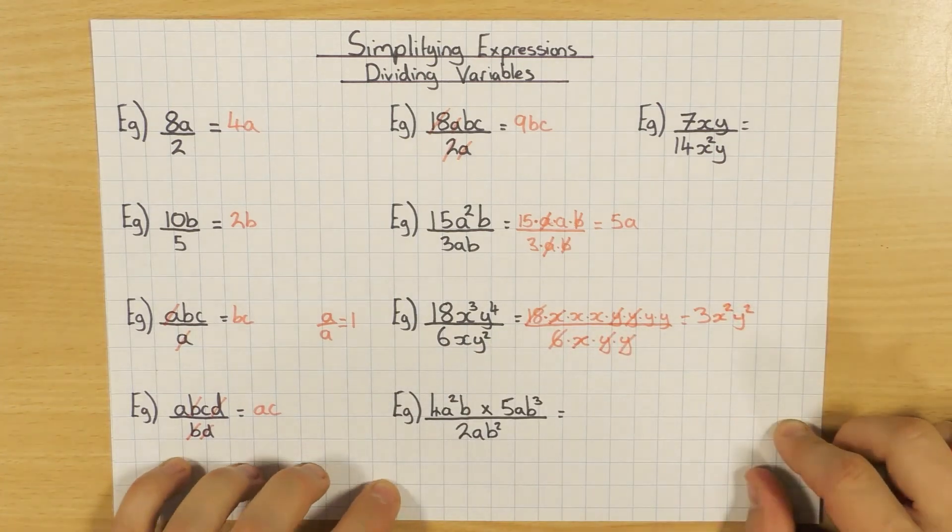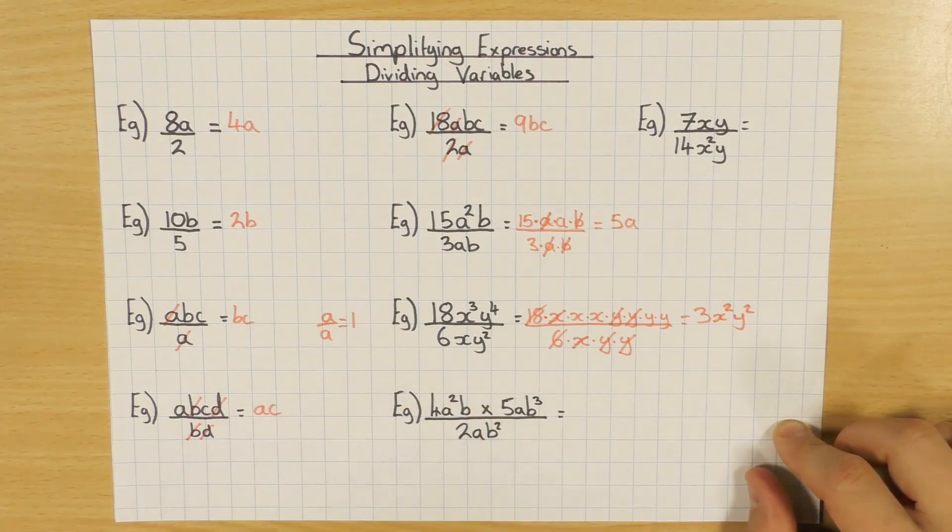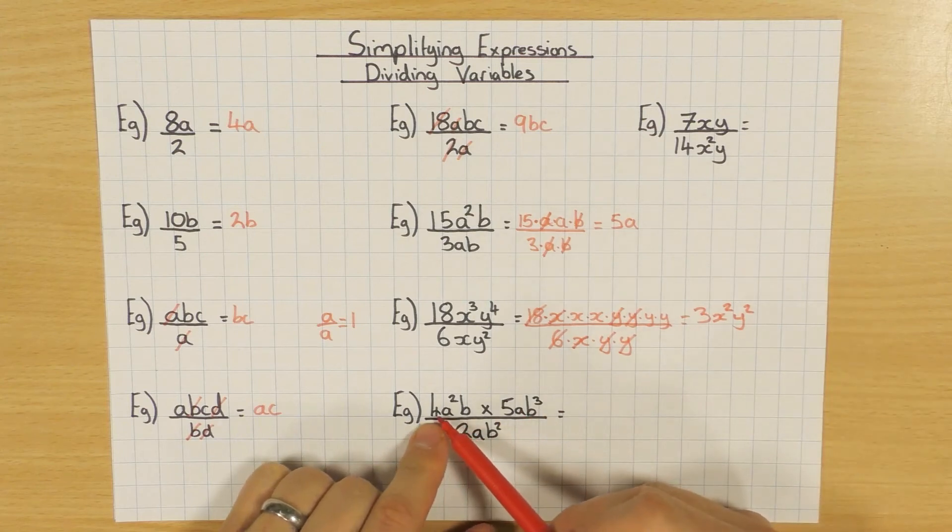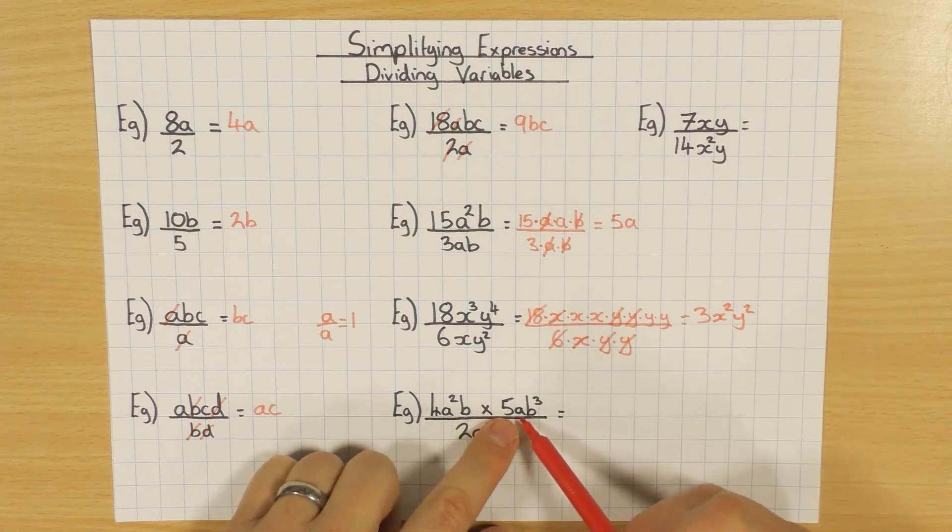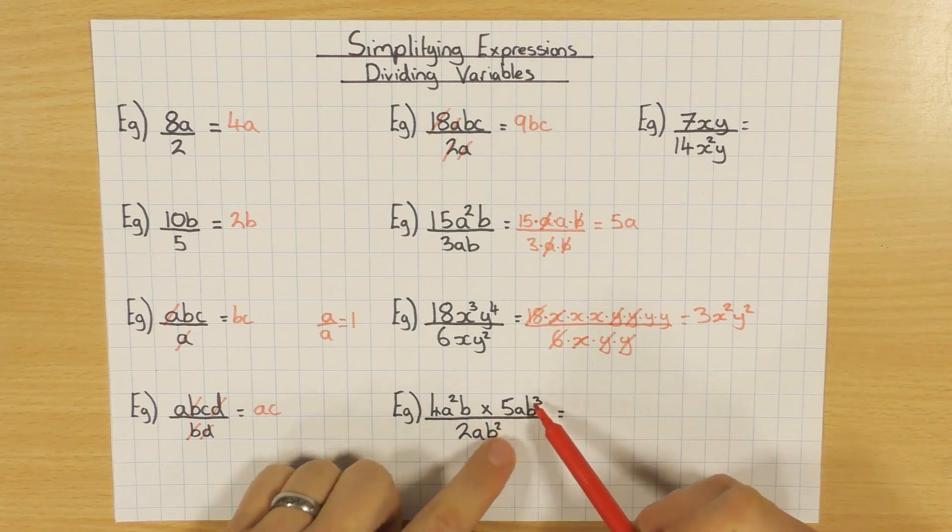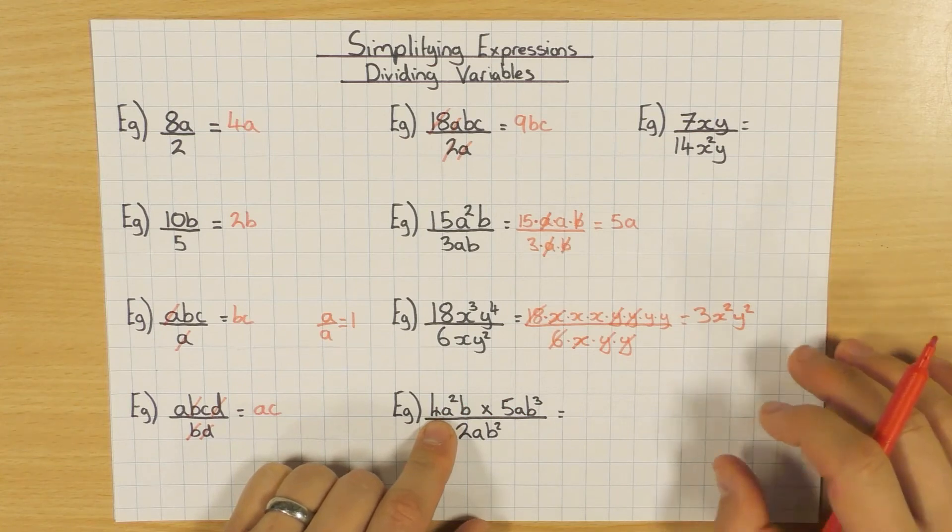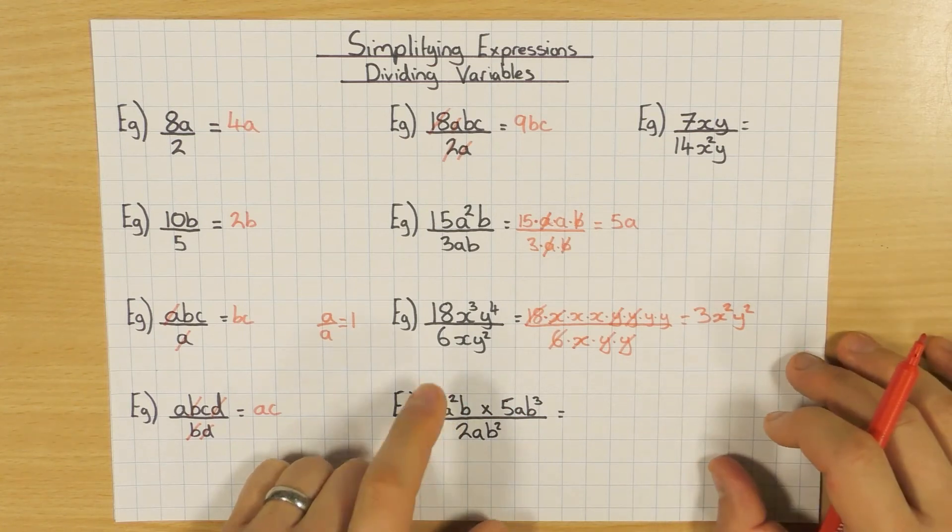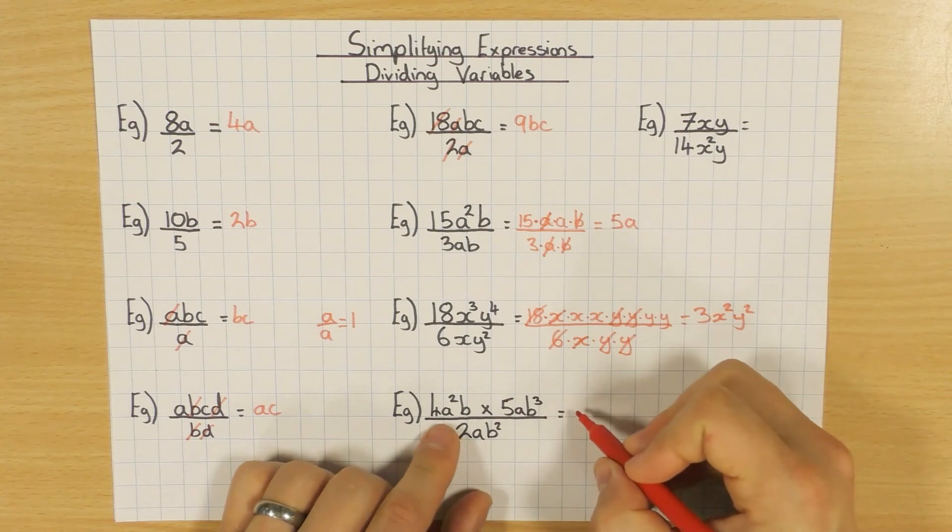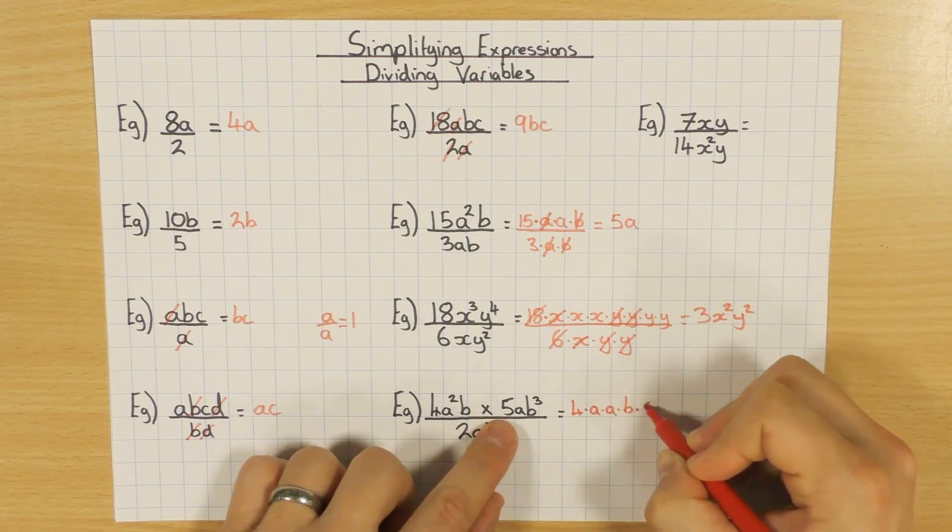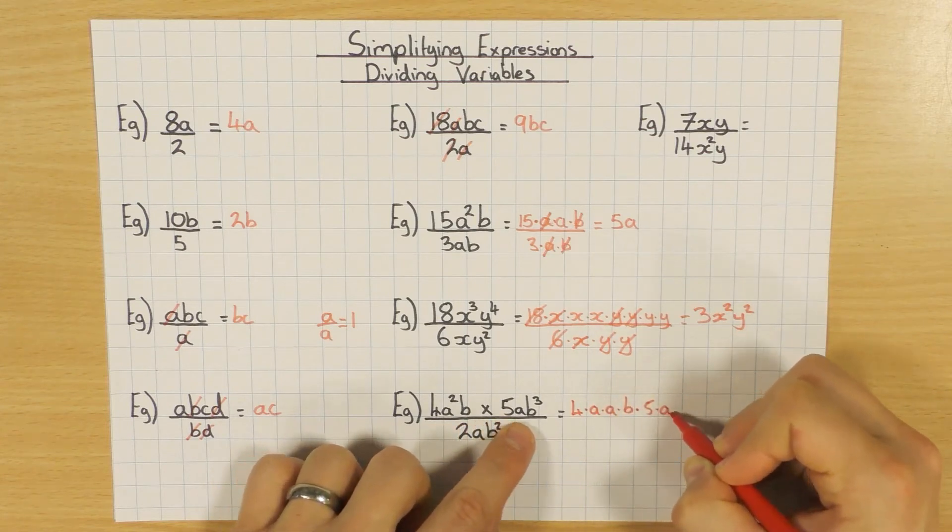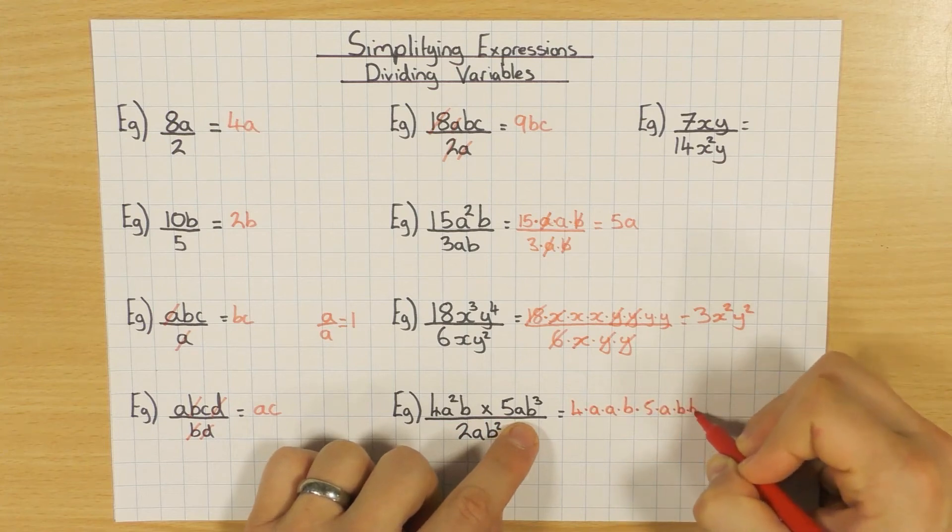And last one here. Sometimes you might have to do a little bit of simplifying on top before you can do the bottom. So this one here, I've got 4a²b times 5ab³. So I'm going to work that out first. So again, if you haven't seen the multiplying, simplifying expressions but multiplying variables video, this is where this comes from. So I'm just going to do that first.